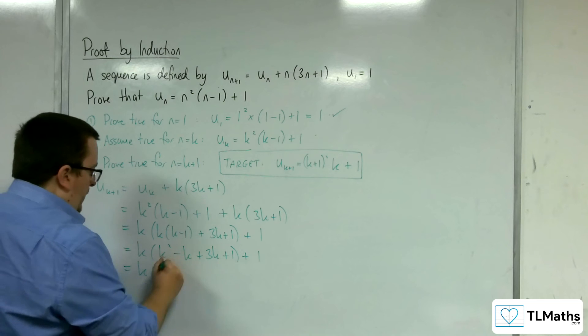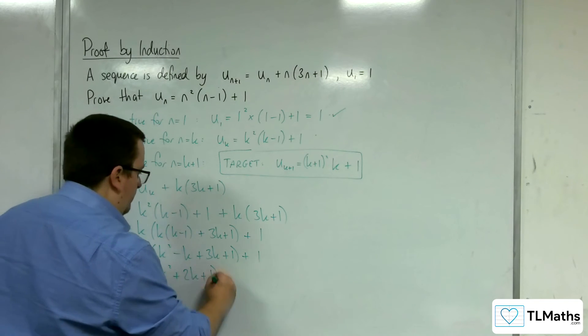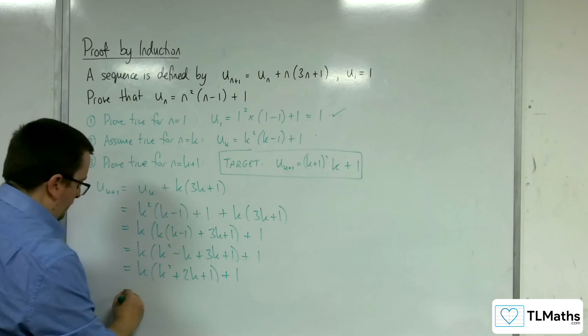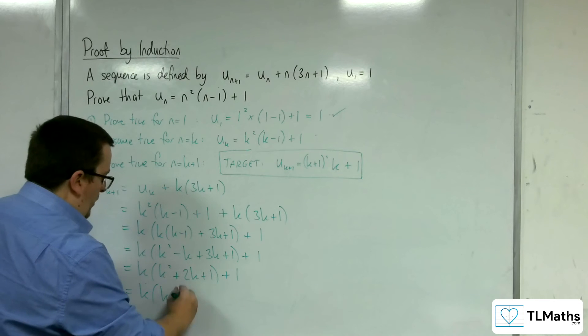So simplifying this, I've got k² plus 2k plus 1. And this, of course, factorizes to (k+1)².